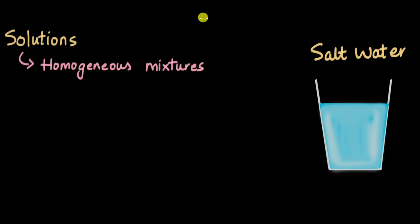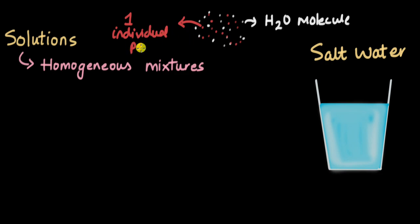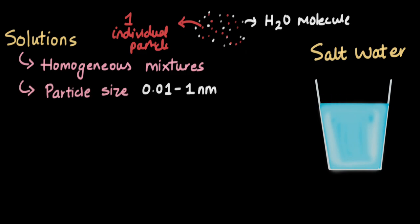What does that really mean? Let's think about it. Each dot represents a water molecule — H₂O. When we say that salt is dissolved in water, it means that each individual particle or ion of salt is spread out uniformly across the body of the water. So each individual particle of NaCl is taking up the space between the water particles. That is what it means when we say something is dissolved in something else.